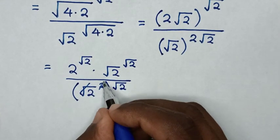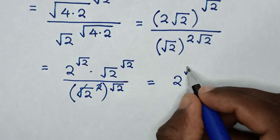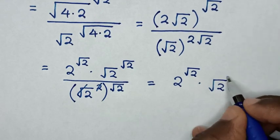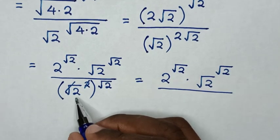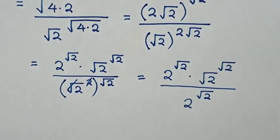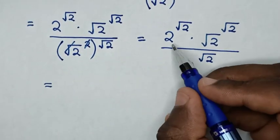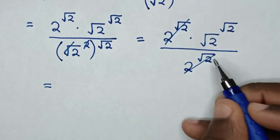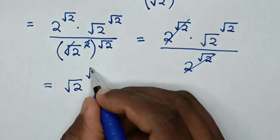Then this square root of 2, over 2 power of square root of 2, over 2 power of square root of 2. In the next step, it can be simplified: 2 square root of 2 will cancel with this 2 square root of 2, so it will be this square root of 2 power of square root of 2.